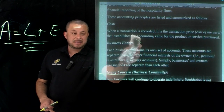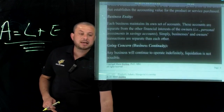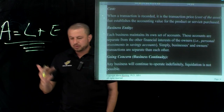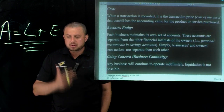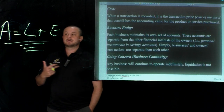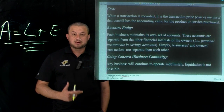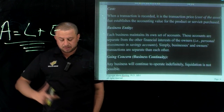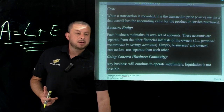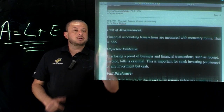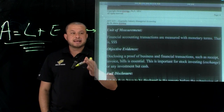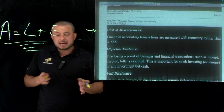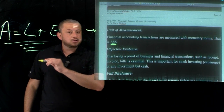Going concern — also called business continuity — means it is assumed in the accounting world that businesses will operate forever. Of course, in real life businesses sometimes go bankrupt, but on the books, in official records at the state, local, or federal government level, businesses are assumed to operate forever. The unit of measurement must be a monetary value — here in the US, everything must be based on US dollars.